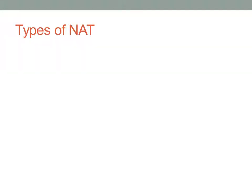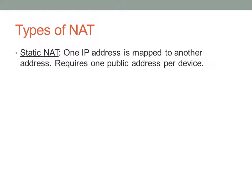Now let's go over the different types of NAT. The first type is Static NAT, which is a one-to-one mapping — you're mapping one IP address directly to another IP address on all ports. For this type of NAT, you need one public address for every single private address you have on your network.